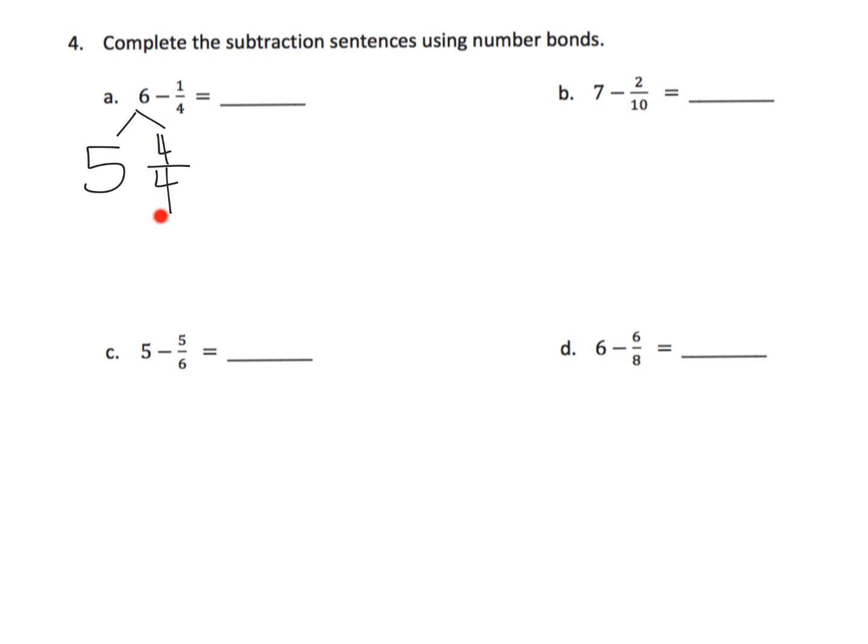Now why did I choose 4 fourths? Why didn't I choose 3 thirds or 7 sevenths? Well I chose 4 fourths because our fraction right here is 1 fourth and that's why. And so now we are ready to subtract. 4 fourths minus 1 fourth, that gives us 3 fourths plus the 5 that we already have. So our answer is 5 and 3 fourths.